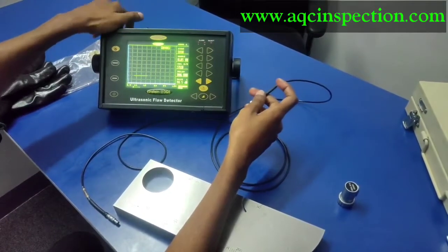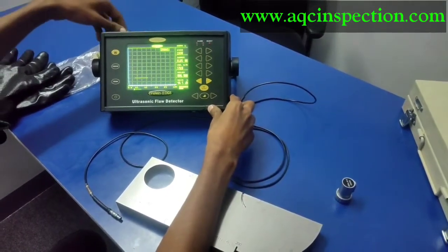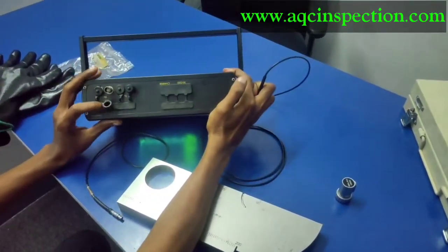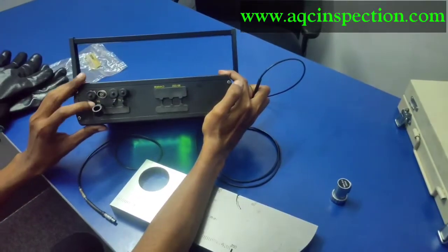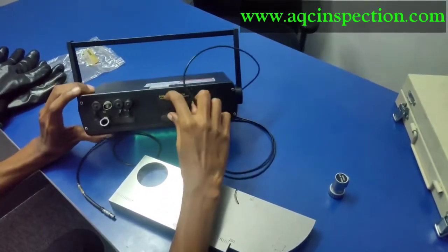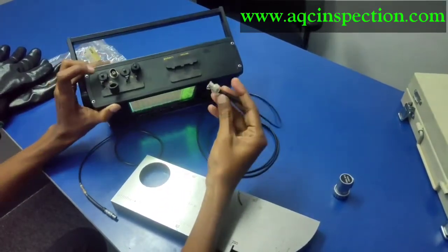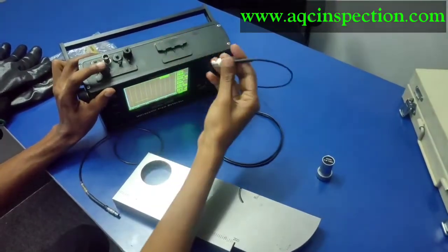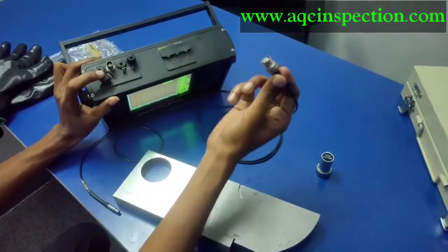First, we are going to connect the probe using a BNC connector and a LEMO cable. We have two ports right here, one is for the transmission, one is for the receiving, and here it's a charging port. Since we are using a normal probe, we can use a single wire which acts as a transmitter as well as a receiver.